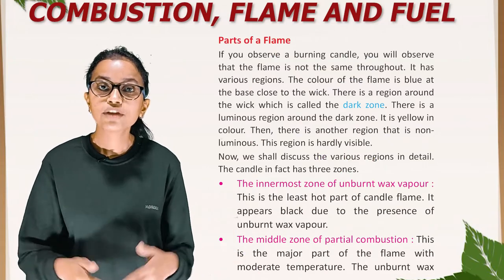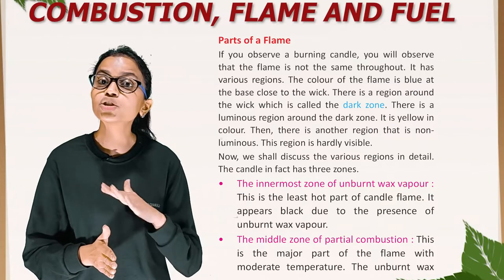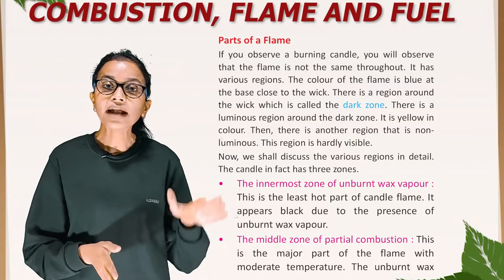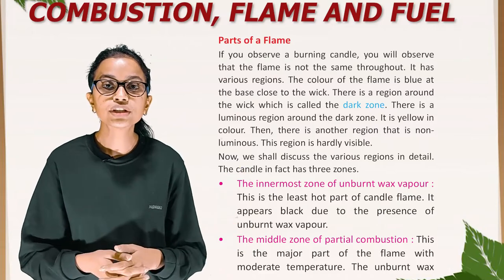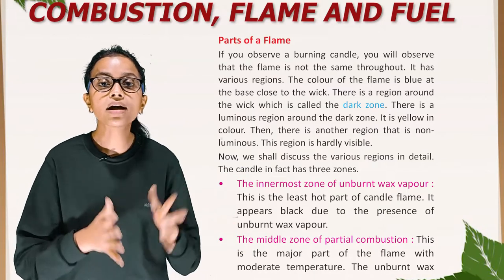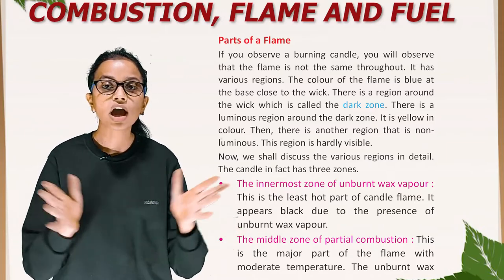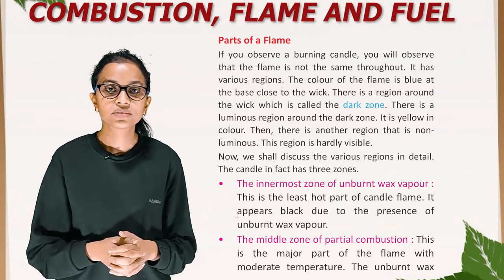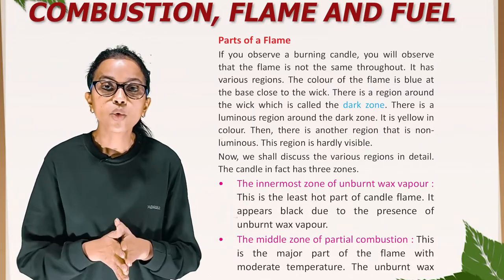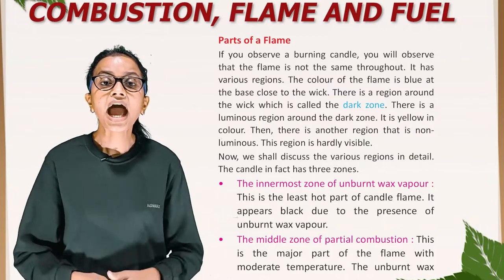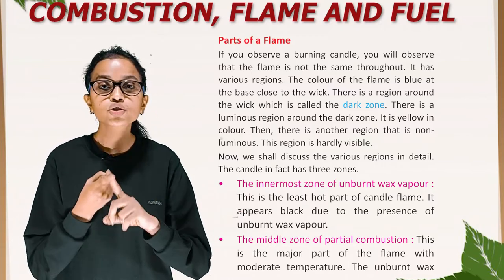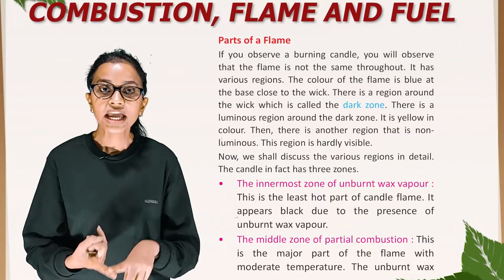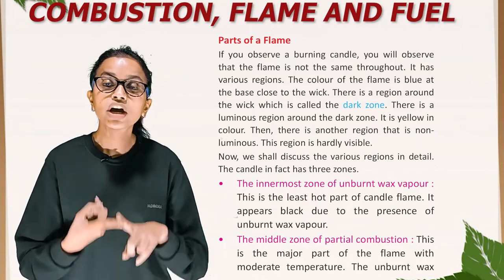Parts of Flame. If you observe a burning candle, you will observe that the flame is not the same throughout — it has various regions. The color of flame is blue at the base, close to the wick. There is a region around the wick called the dark zone. There is a luminous region around the dark zone which is yellow in color. Then there is another region that is non-luminous and is hardly visible. The candle flame in fact has three zones. The first zone is the innermost zone of unburnt wax vapor — this is the least hot part and appears black due to the presence of unburnt wax vapor.